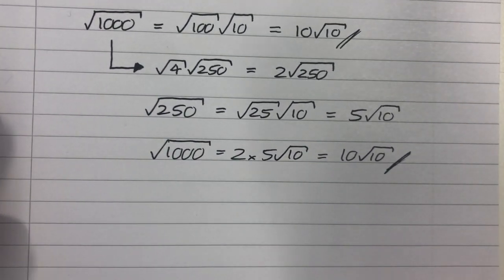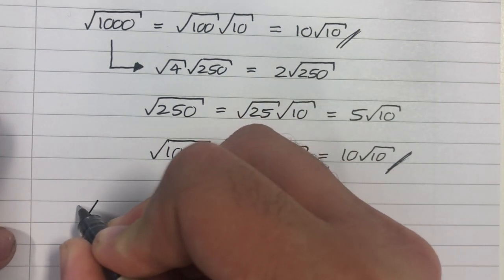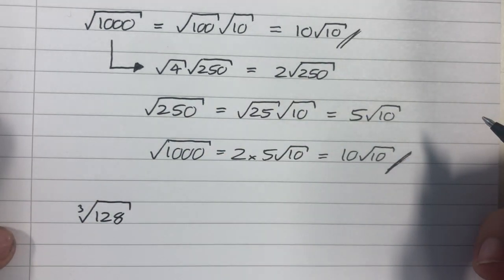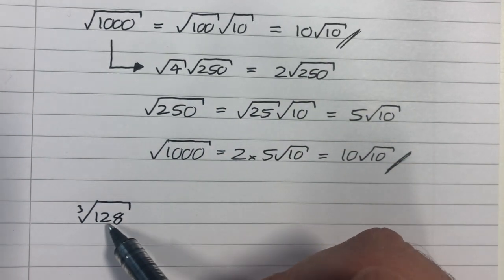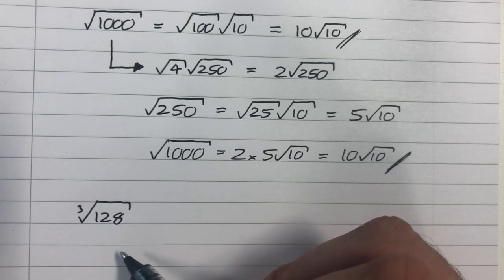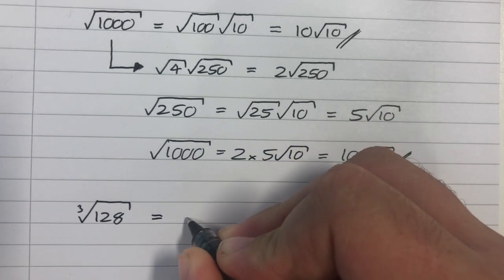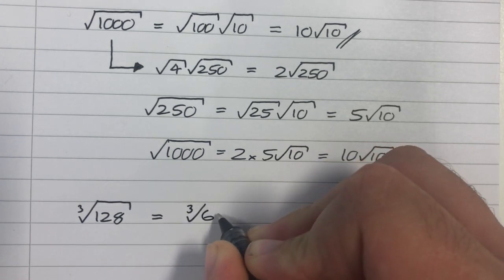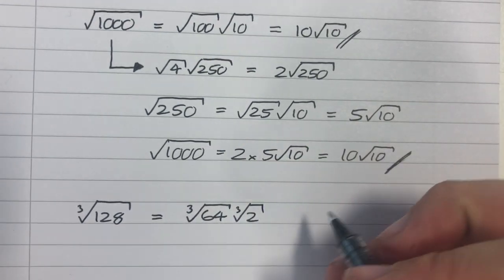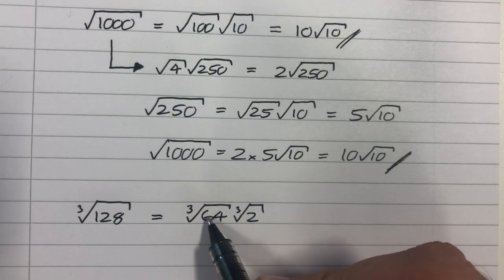One quick example on a cube root then. So let's say we are looking for the cube root of 128. Well, now we're not looking for the highest square number that goes into 128 anymore. We're looking for the highest cube number. Now, maybe this wasn't a great example, because actually the highest cube number is equal to the highest square number. So it's equal to the cube root of 64 times the cube root of 2. Because 64 times 2 is 128, and 64 is a cube number.